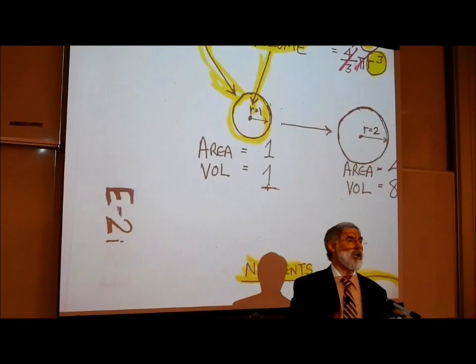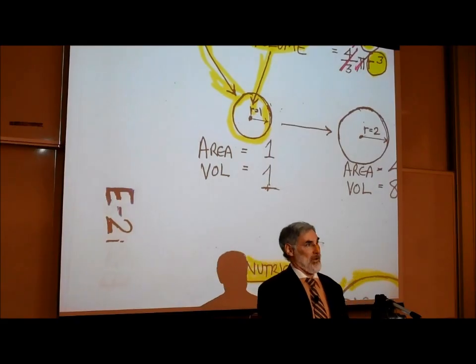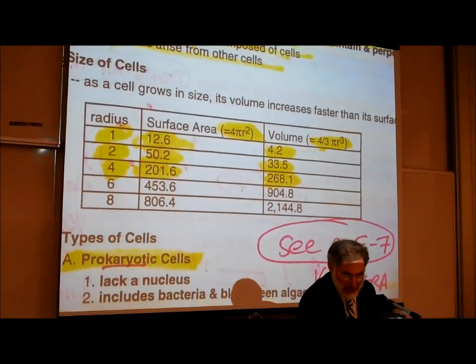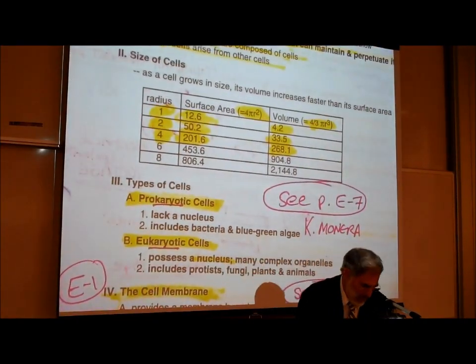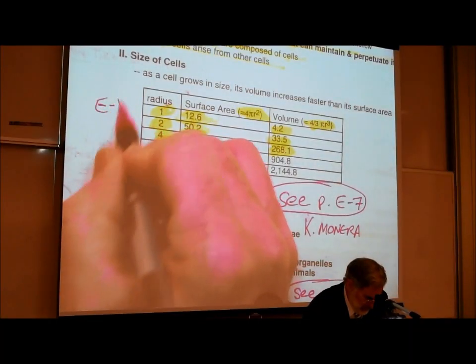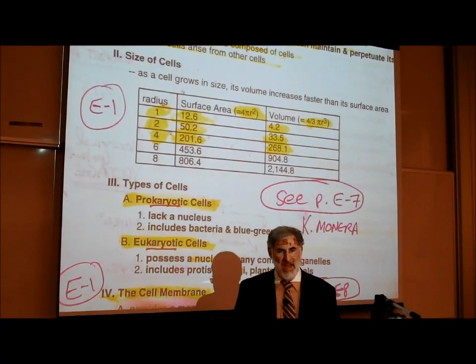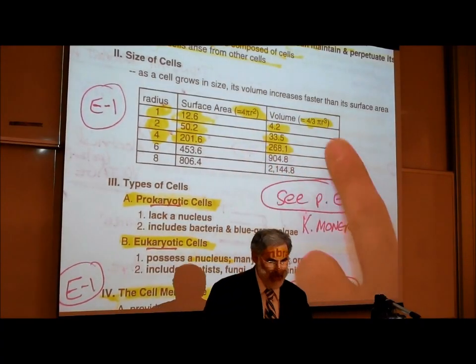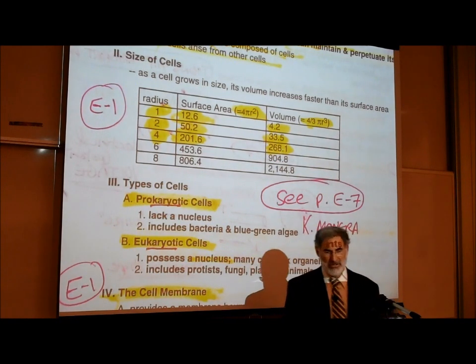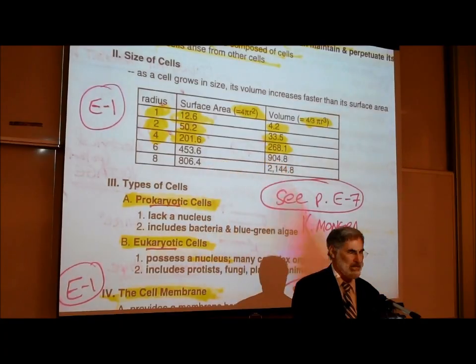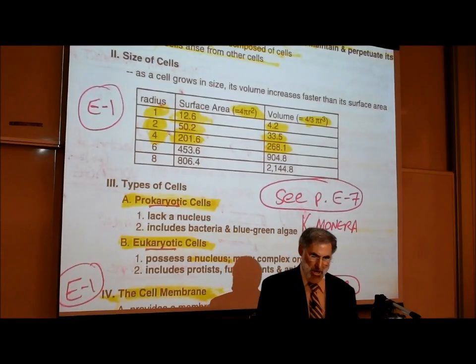When cells are small, we've seen that surface area equals volume — so the surface area is more than sufficient for nutrients to get in and waste products to get out. This is in Chapter 3 of the textbook. To summarize on page E1: as a cell grows in size, its volume increases faster than its surface area, because volume increases with the cube of the radius while surface area increases only with the square of the radius.